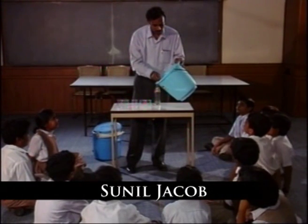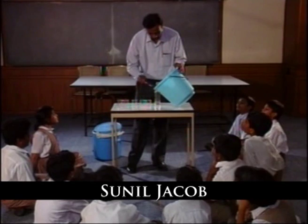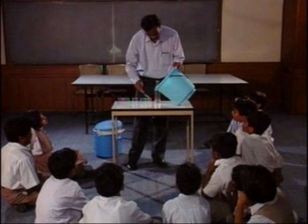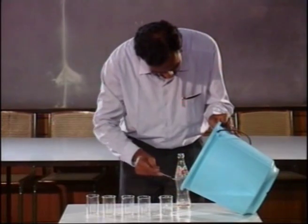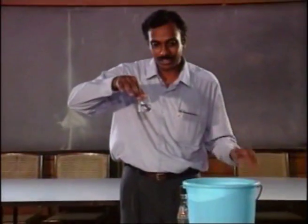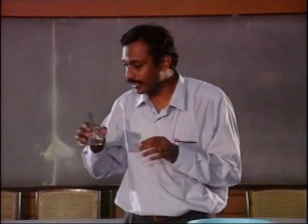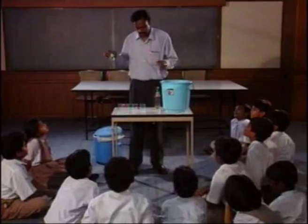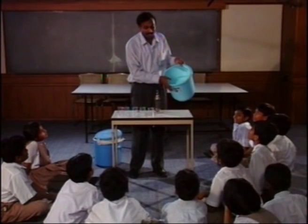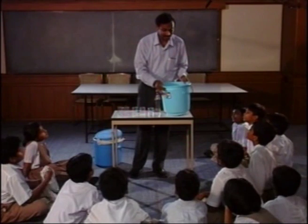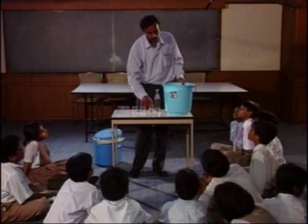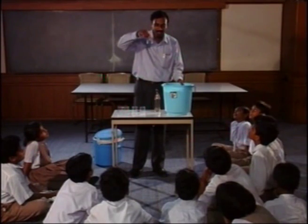I am going to take out 12 spoons — so you all count. Twelve spoons of water represents the amount of fresh water that is available on earth. And this amount of water that is remaining in this bucket is salty — this is the water found in the oceans and seas. So, we had this bucket of water and out of it we have only so much which is fresh water.